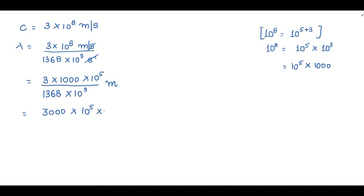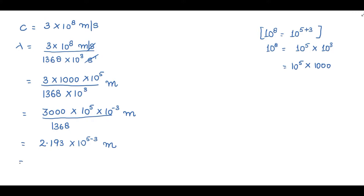So we have 3000 into 10 raised to power 5 divided by 1368, units meter only. When you divide 3000 by 1368 the answer is 2.193. The powers of 10 are in multiplication, so I simply add the exponents: 5 minus 3, giving 10 raised to power 2. So lambda equals 2.193 into 10 raised to power 2 meter.